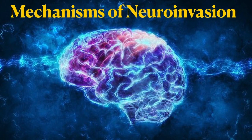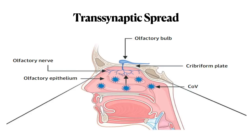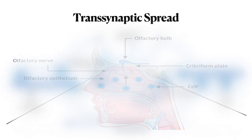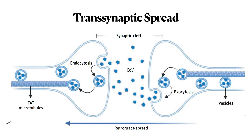The mechanisms of neuroinvasion of this virus primarily involve trans-synaptic spread. The virus enters through the olfactory nerves via the inhalational route, where it is picked up by endocytosis and can reach the brain through fast microtubules or through vesicles — a retrograde spread.